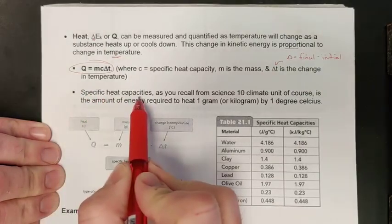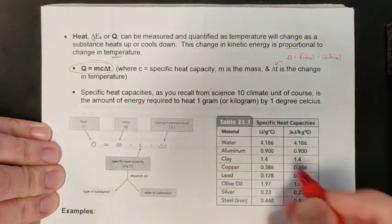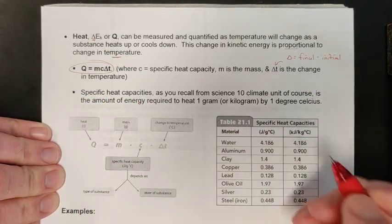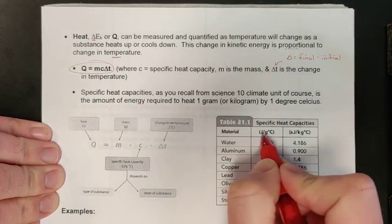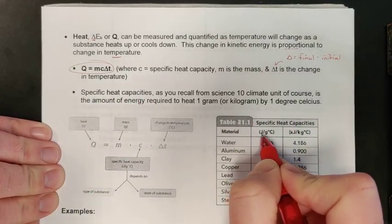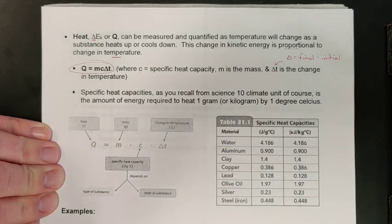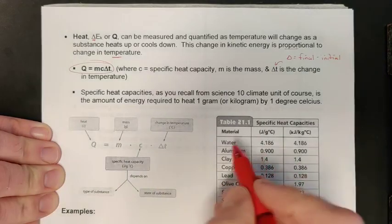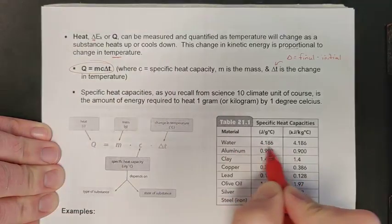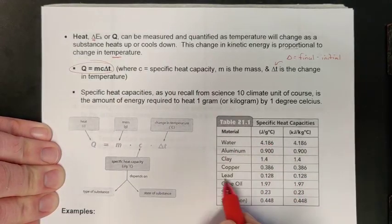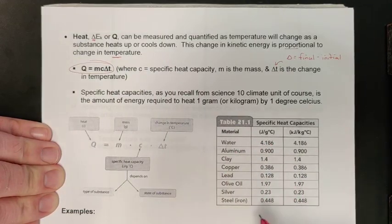Specific heat capacities have a couple of different units. Be very mindful of this. On your data sheet, it is often given as joules of energy per gram of substance per degree C change. Water, you'll notice, is very high. Our metals like lead and copper are very low.